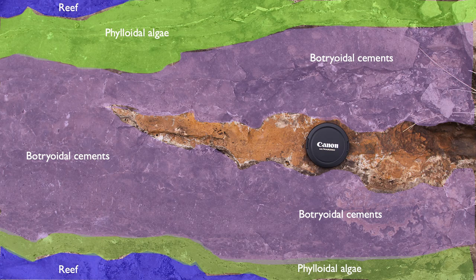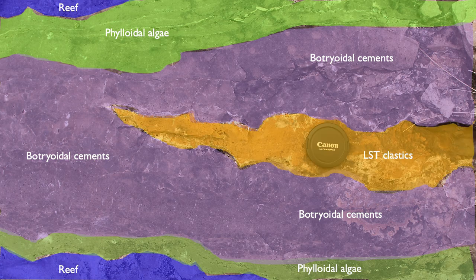What's also interesting is the volume of cement - this botryoidal cement literally fills all the cavities left in the reef. Where there's just a tiny bit of porosity left, it's filled with lowstand clastics that fall into the crack and fill the cavity. Sadly, the reef, which had beautiful framework porosity to begin with here in the Guadalupian, is completely filled - all the porosity is lost.